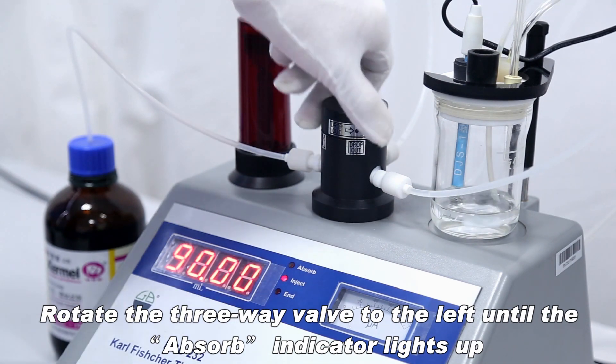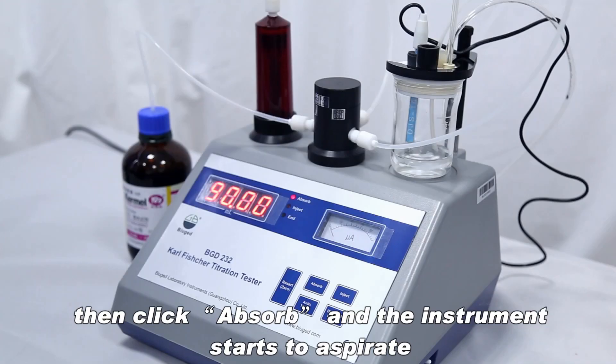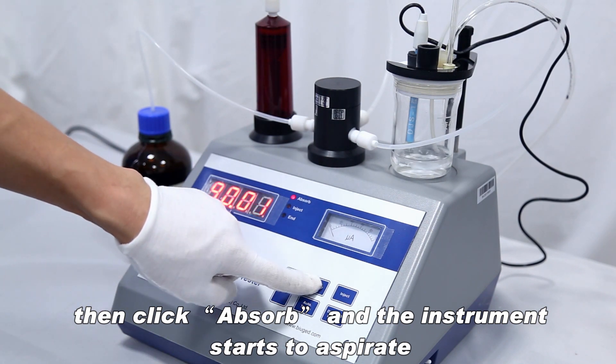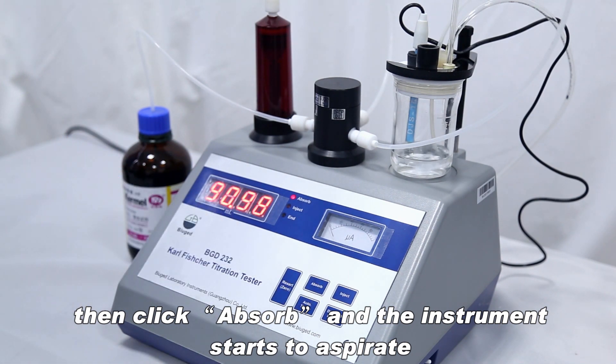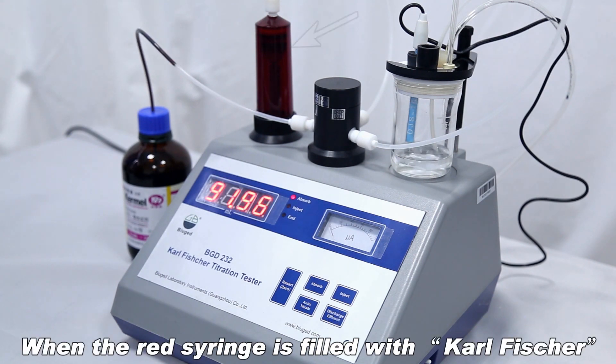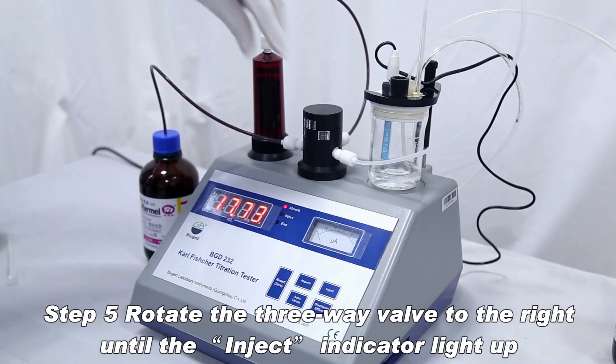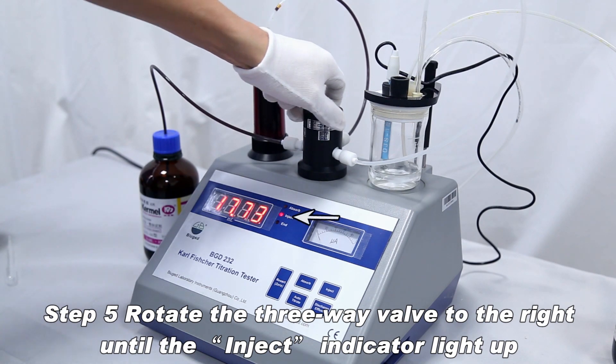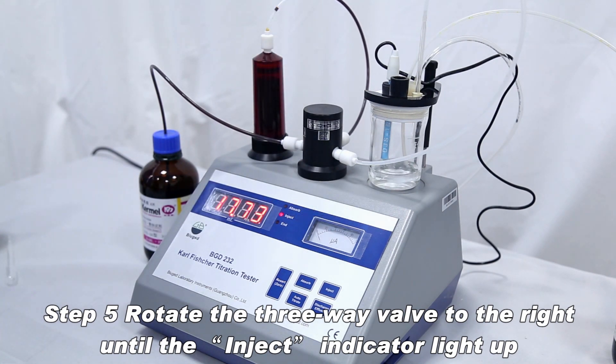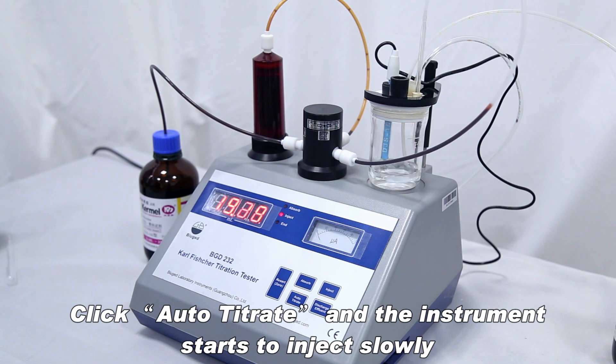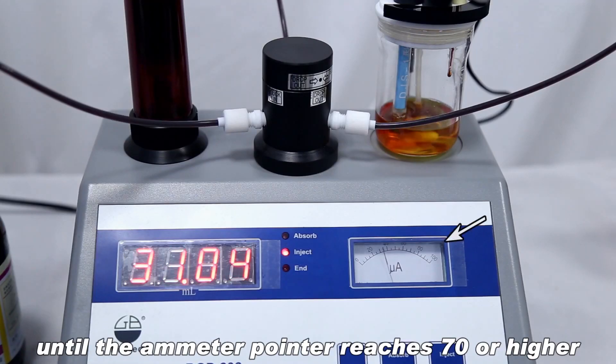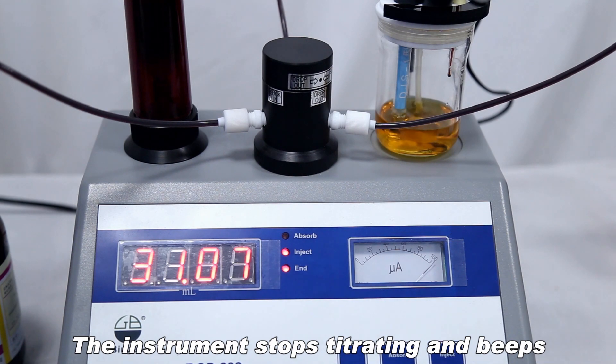Rotate the 3-way valve to the left until the absorb indicator lights up. Then click absorb and the instrument starts to aspirate. When the red syringe is filled with Karl Fischer it stops automatically. Rotate the 3-way valve to the right until the inject indicator lights up. Click auto-titrate and the instrument starts to inject slowly. Until the ammeter pointer reaches 70 or higher, the instrument stops titrating and beeps.